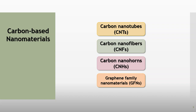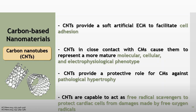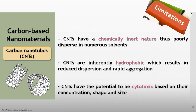Different types of carbon-based nanomaterials have been used for cardiac tissue engineering. They are carbon nanotubes, carbon nanofibers, carbon nanohorns, and graphene family nanomaterials. Carbon nanotubes, or CNTs, provide a soft artificial ECM to facilitate cell adhesion and represent a more mature molecular and cellular electrophysiological phenotype for cardiomyocytes. CNTs also provide a protective role for cardiomyocytes against pathological hypertrophy, and they could act as free radical scavengers to protect cardiac cells from damage made by free oxygen radicals.